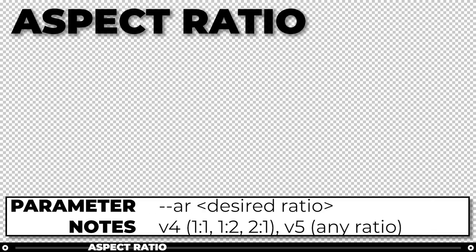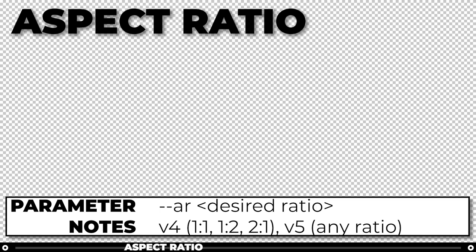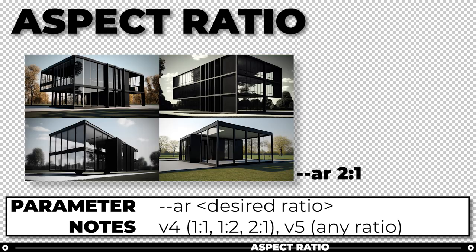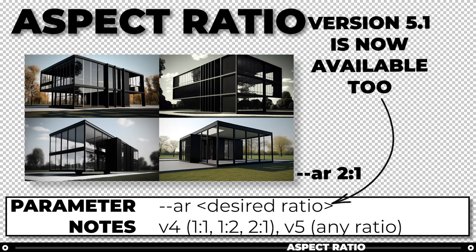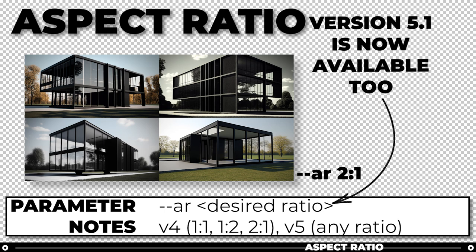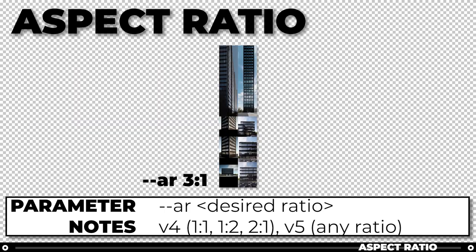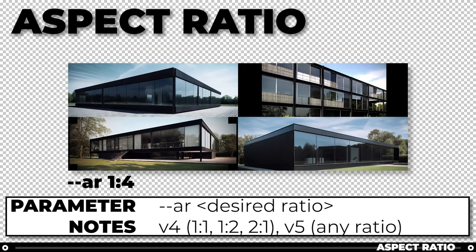Aspect ratios can be changed by using the aspect parameter. On version 4 of Midjourney, the default is 1:1, and you can choose between 1:1 which is square, 1:2 which is portrait, and 2:1 which is landscape. On version 5, you can choose higher ratios like 3:1 and 1:4.